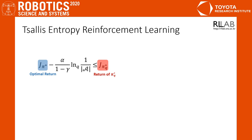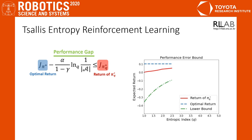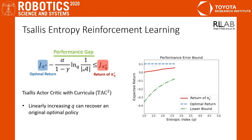For discrete action space, we prove that the gap between two returns is lower bounded by this term. The absolute |A| indicates the number of actions. This bound clearly shows that the gap between two returns vanishes as the q value increases, because the magnitude of Tsallis entropy decreases. Inspired by this fact, we linearly increase the q value. We call this method Tsallis Actor-Critic with Curricula, or TAC². TAC² encourages exploration when the q value is small, and gradually converges to the greedy optimal policy as the q value increases.